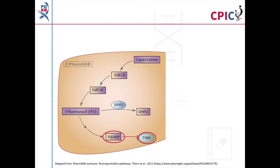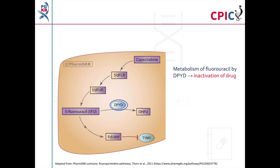However, the precise mechanism of action remains uncertain. The DPYD gene, which codes for the DPD protein, is responsible for inactivating fluorouracil into dihydrofluorouracil, or DHFU. This reduces the number of molecules available for conversion into the FdUMP metabolite.